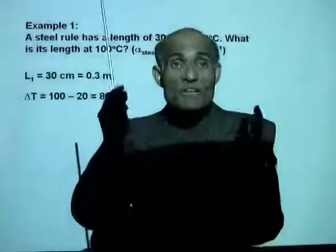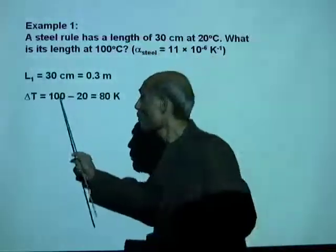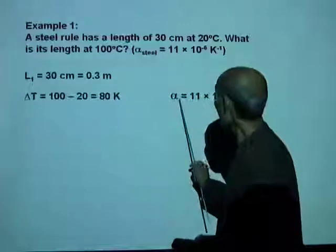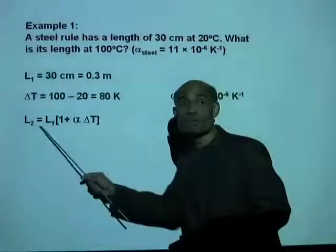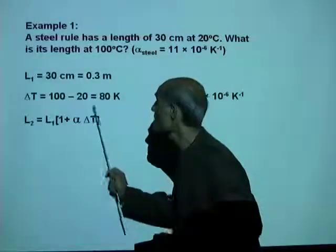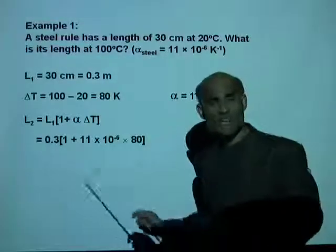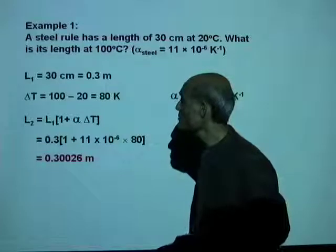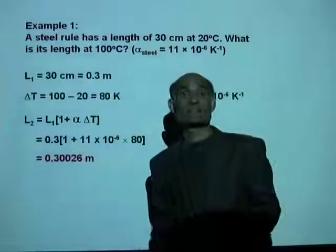100 degrees Celsius minus 20 degrees Celsius, that is 80 Kelvin. Remember, a difference in temperature measured in Celsius and Kelvin are exactly the same. So 100 degrees Celsius minus 20 degrees Celsius is 80 Kelvin. Alpha is 11 times 10⁻⁶ per Kelvin. L₂ equal to L₁ times 1 plus alpha delta T. We have all these values. So replace these quantities by their values and use your calculator to evaluate this.